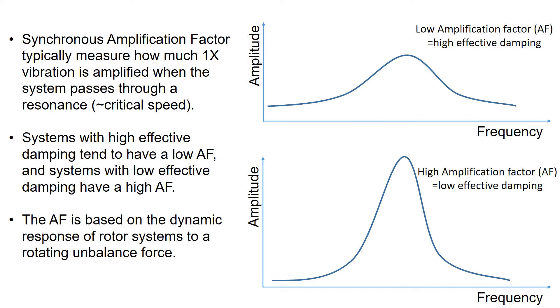As you can see in the right figure, the system with high effective damping tends to have a low amplification factor, while systems with low effective damping have a higher amplification factor. Remember that a low amplification factor is better than high amplification factor, and a low amplification factor indicates high effective damping in the system.